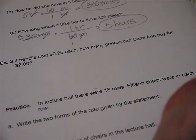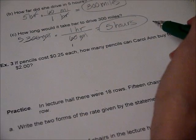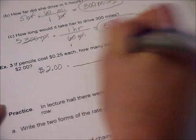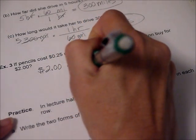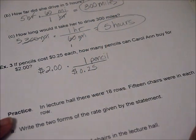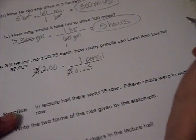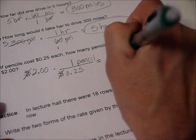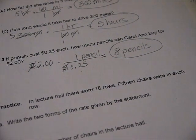Last one. If pencils cost 25 cents each, how many pencils can Carol Ann buy for $2? Now they didn't ask us to write a rate, so let's just start out for $2, and then a rate. One pencil. So they're saying how many pencils, we're going to have money down here, and so one pencil is 25 cents. So now our money can cancel out, right? And we basically are dividing $2 divided by 25 cents. So you get eight pencils because there are eight quarters in $2, right?